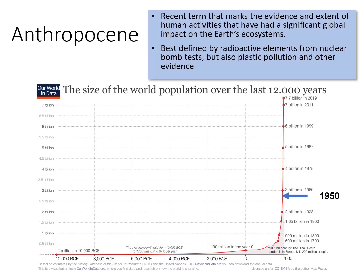The Anthropocene is a term used to describe the significant influence of human activities on Earth. The next few slides illustrate some of these changes. Most scientists put the start of the Anthropocene in the 1950s.